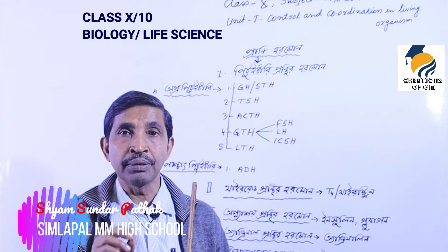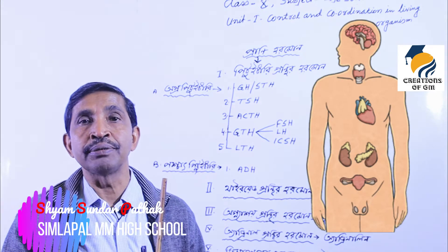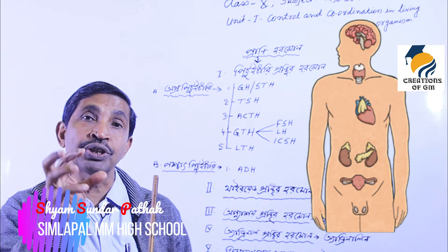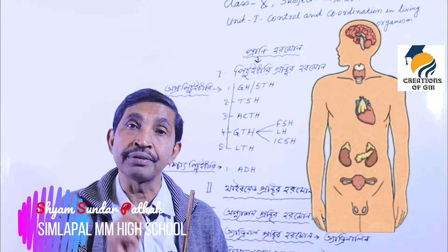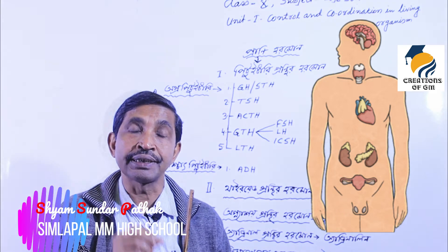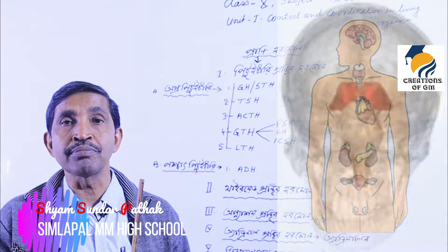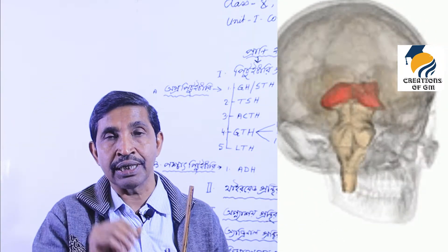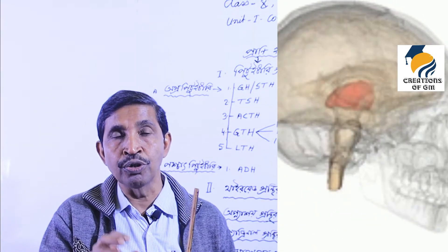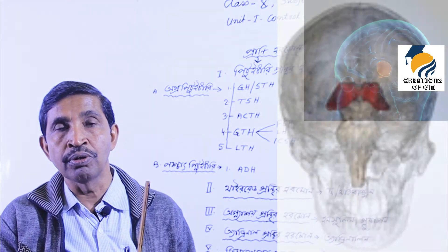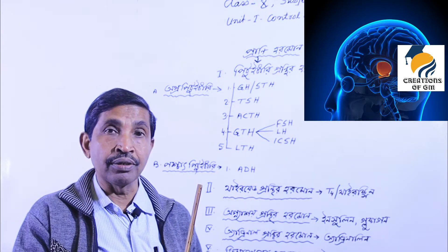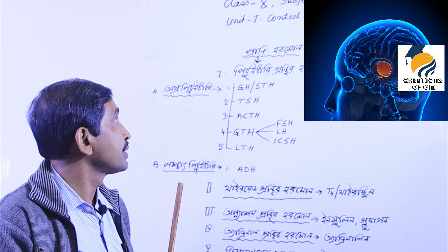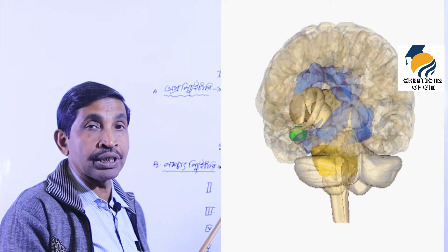The first endocrine gland — as humans, the first endocrine gland is located in the most common part of the brain. There is a master gland. The most common brain region can be used as a master gland. The master gland is the pituitary gland.